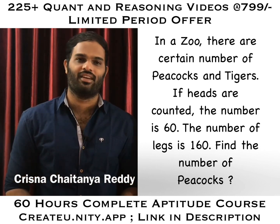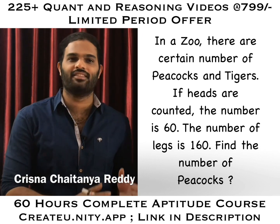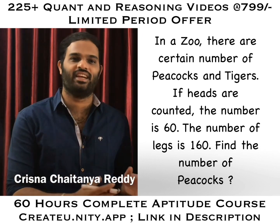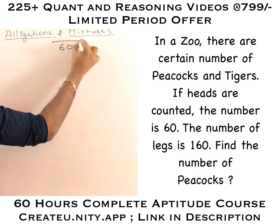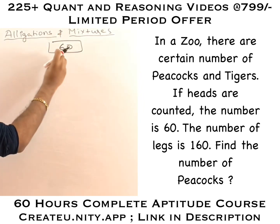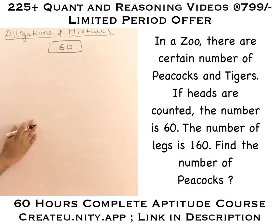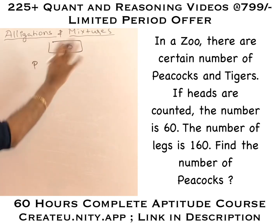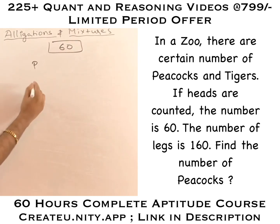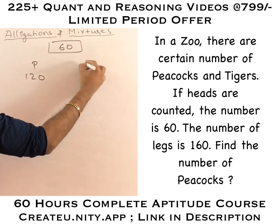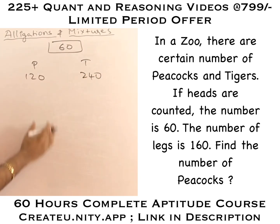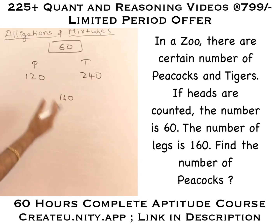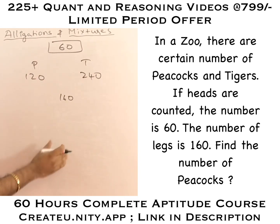That is going to help you a lot. Pay your attention — this will help you in solving many questions. He said there are total of 60 heads, which means peacocks and tigers together are 60. Assume that all 60 are peacocks. If all 60 were peacocks, it would have been 120 legs because each peacock has two legs. If all 60 were tigers, it would have been 240 legs because each tiger has four legs. But the number given is 160 because there are some peacocks and some tigers.